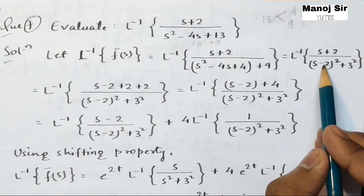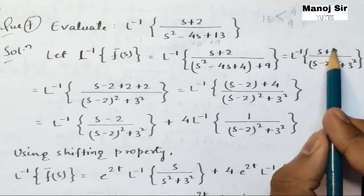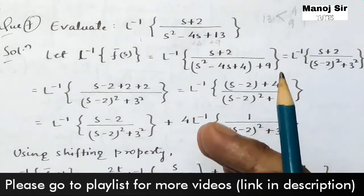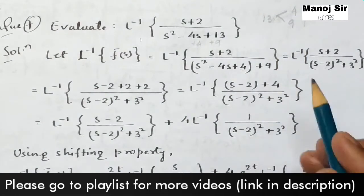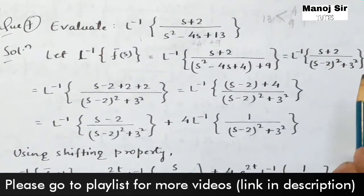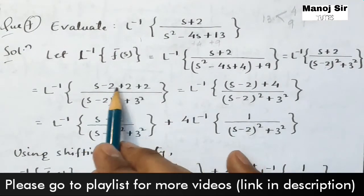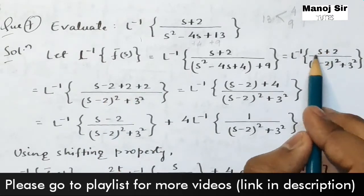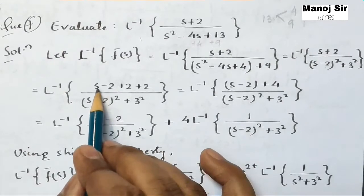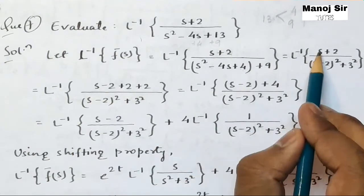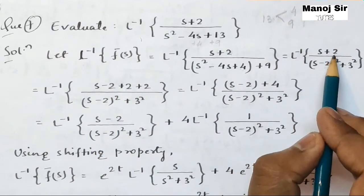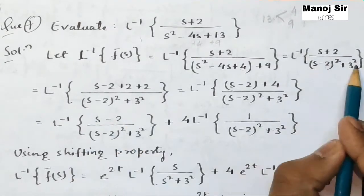Since we have (s − 2) in the denominator, we need to make the numerator also contain (s − 2) so that we can apply the shifting property. To use the shifting property, we need to make the numerator part as (s − 2). So we are going to add and subtract 2 within the numerator part, giving us (s − 2 + 2 + 2) in the numerator.